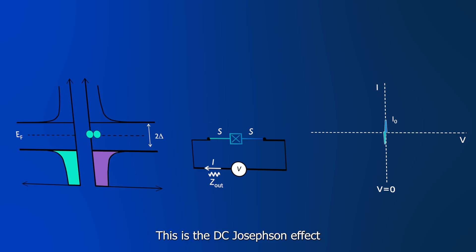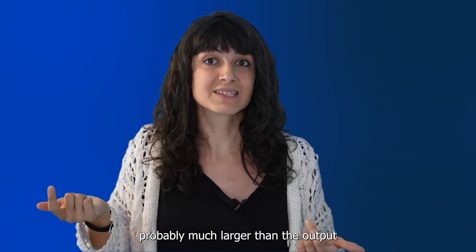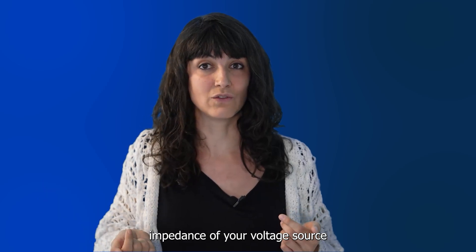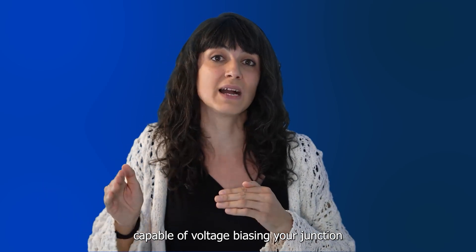This is the DC Josephson effect, consequence of direct tunneling of Cooper pairs. Once the critical current is reached, the junctions will dissipate, behaving as a normal resistor with finite resistance, probably much larger than the output impedance of your voltage source, that will become now capable of voltage biasing your junction.